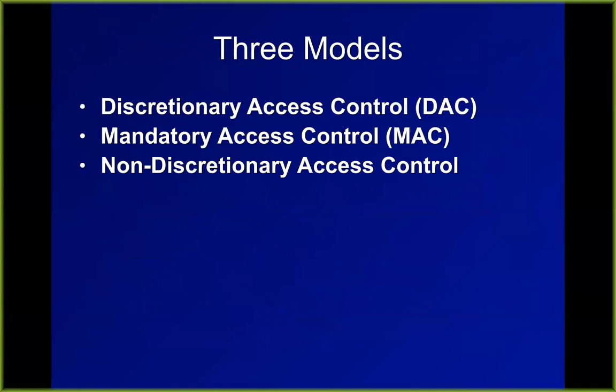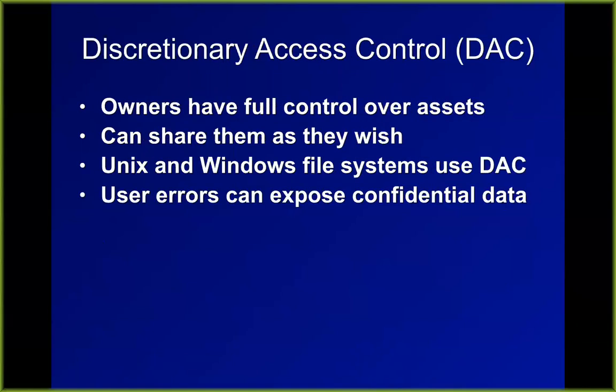Here are the three main access control models. Discretionary access control is the weakest. Mandatory access control is the strongest. And there are non-discretionary ones in between. Discretionary is what you have for home users — you have a laptop or cell phone not controlled by a boss. You can do anything you want with it: put any data on it, share it with anyone, give your password to someone else. Appropriate at home, obviously not appropriate at work.